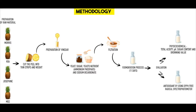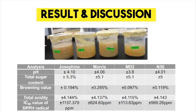Furthermore, we add yeast, sugar, and yeast nutrients — ammonium phosphate and sodium bicarbonate. We then filter using filtration equipment. After that, the fermentation process takes about 11 days. We then proceed to evaluation, which includes antioxidant measurement using the DPPH free radical spectrophotometer method, as well as physical chemical tests including total acidity, pH, sugar content, and browning value.